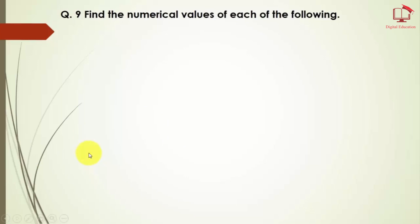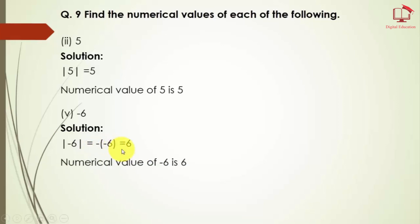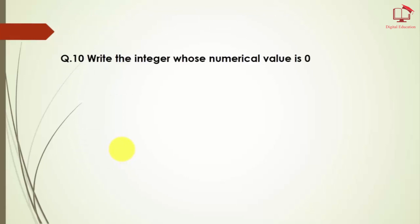Question number 9: find the numerical values of each of the following. For the second part — the numerical value of 5 — we write it in bar form; removing the bar gives us 5, so the numerical value of 5 is 5. For part 5 — the numerical value of minus 6 — minus minus gives plus, so the numerical value of minus 6 is 6. Question number 10: write the integer whose numerical value is 0. The answer is 0.